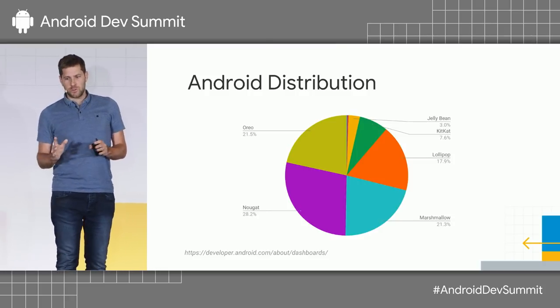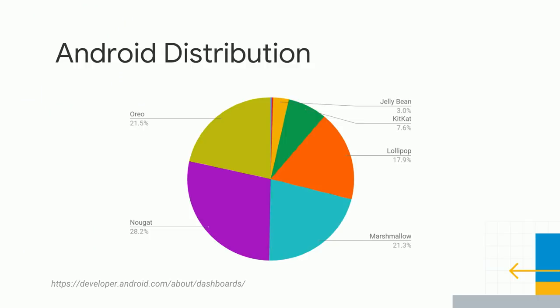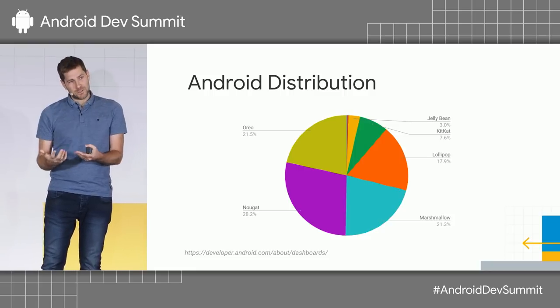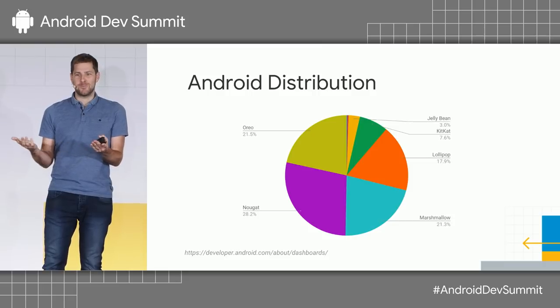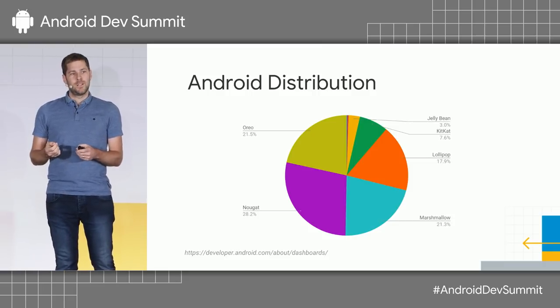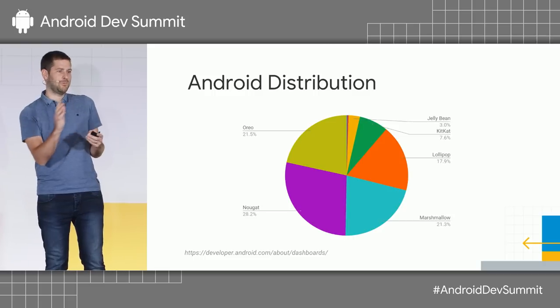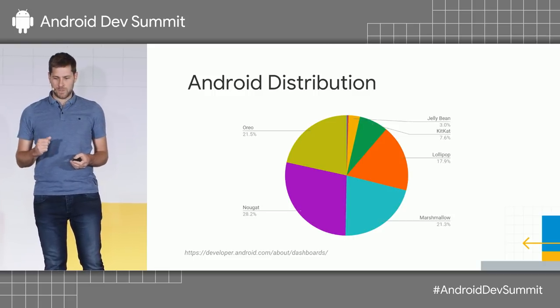Before I dive into ART details, I wanted to show the state of Android distribution today. In case you're still optimizing for Dalvik — or if you need to care about Dalvik and this annoying GC for alloc — there's still this 10% here: KitKat, Jellybean, and a few others. Around 10% of devices are still running KitKat, which is probably like 200 million users — quite a big number. So it still matters. But give it a couple of years, and hopefully Dalvik will be gone and can be part of this museum.